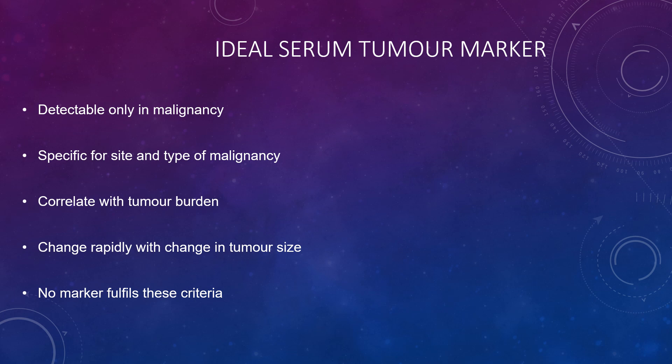The ideal serum tumour marker should be detectable only in malignancy, specific for the site and type of malignancy, correlate with the tumour burden, and change rapidly if there is a change in tumour size. Unfortunately, there is no marker that currently fulfils all of these criteria.